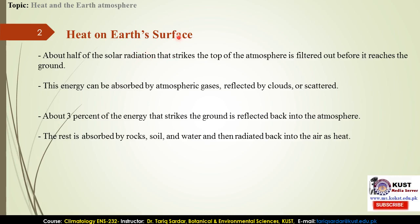About half of the solar radiation that strikes the top of the atmosphere above the Earth's surface is filtered back or reflected. There is ozone — a blanket of gases. Before it reaches the ground, at the upper troposphere level, this energy can be absorbed by those gases, reflected by clouds, or scattered by aerosols. Scattering occurs when a light wave strikes a particle and bounces back in some other direction.